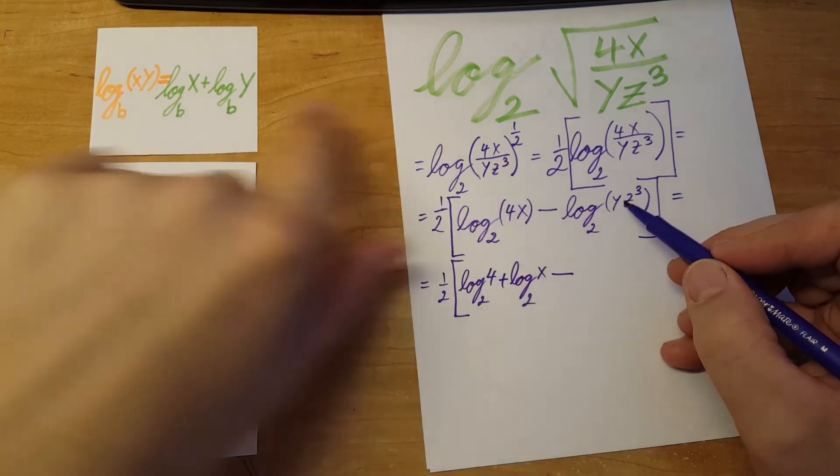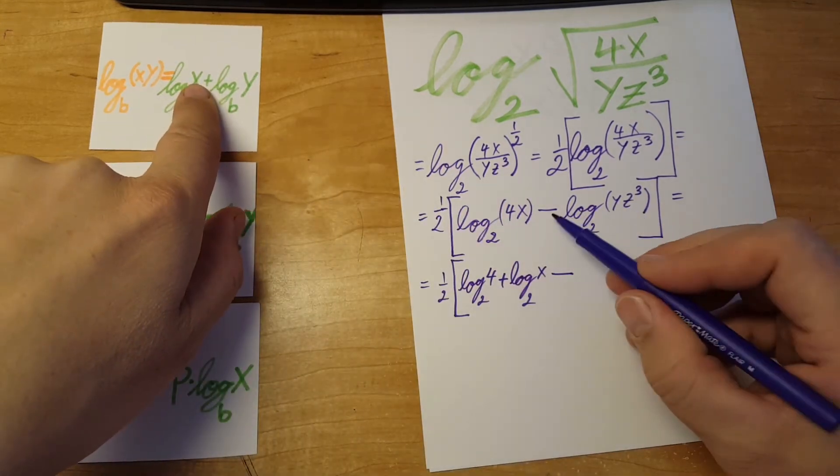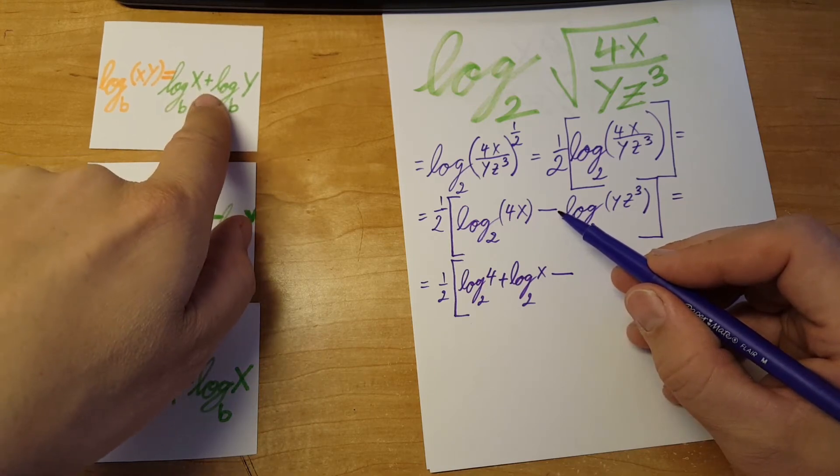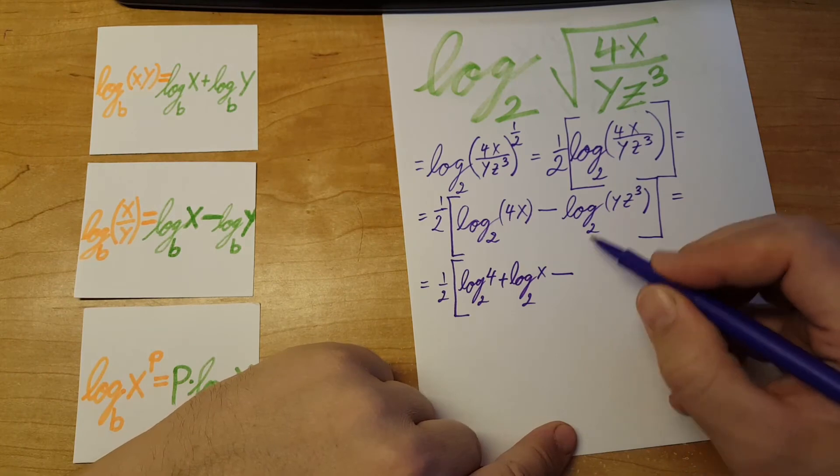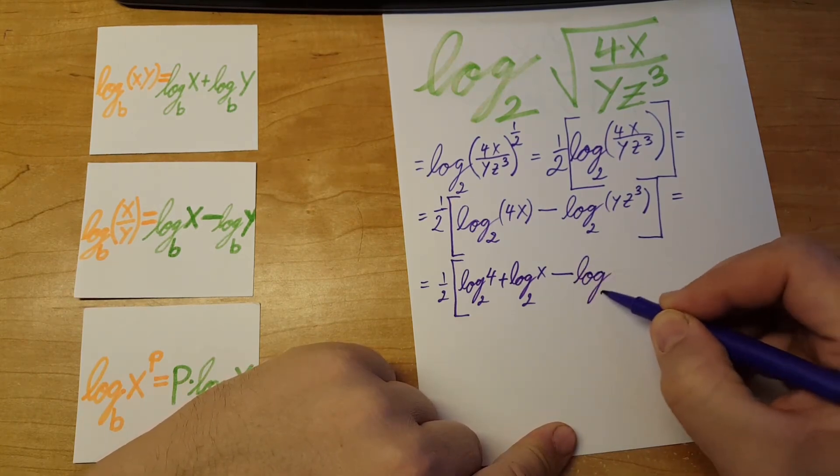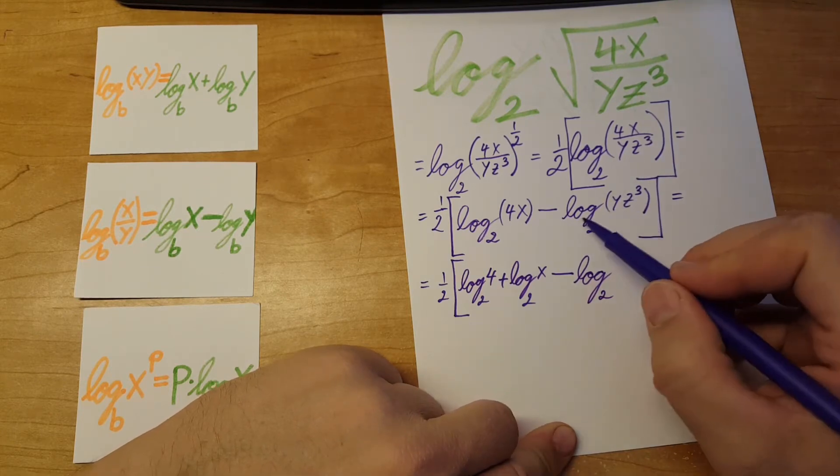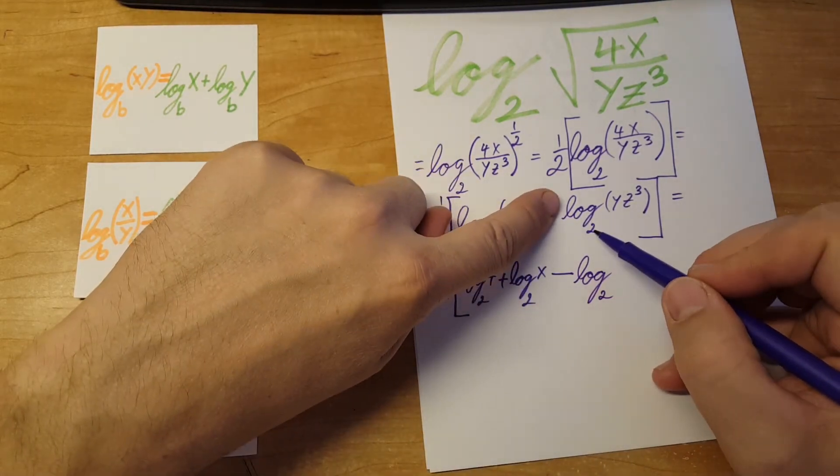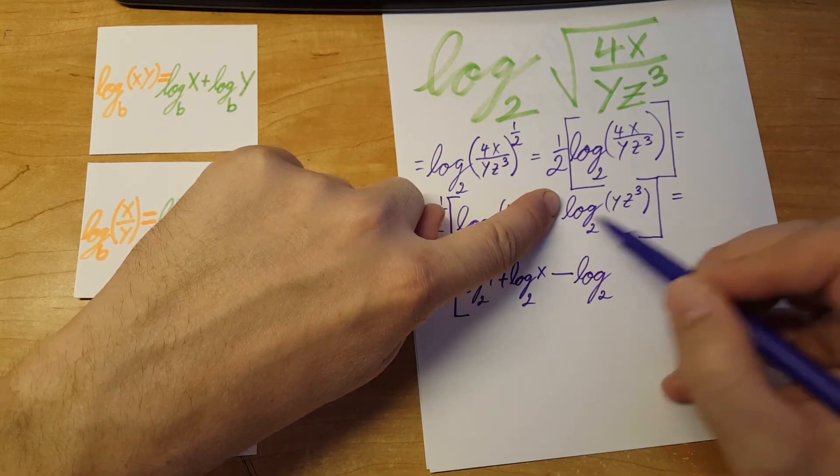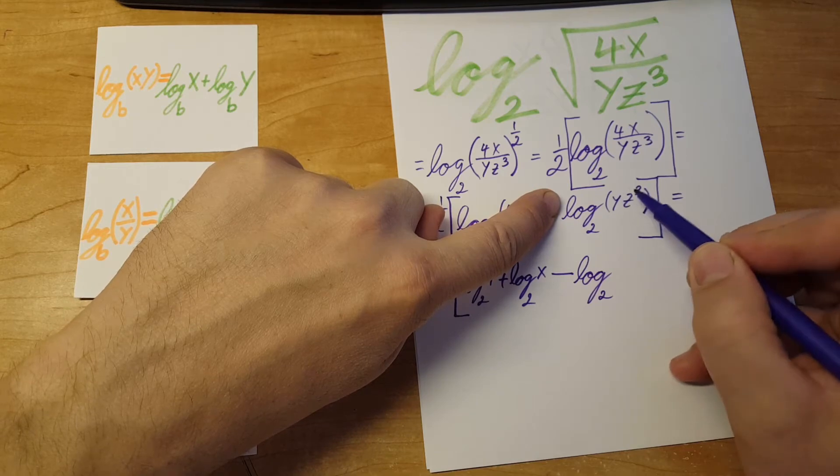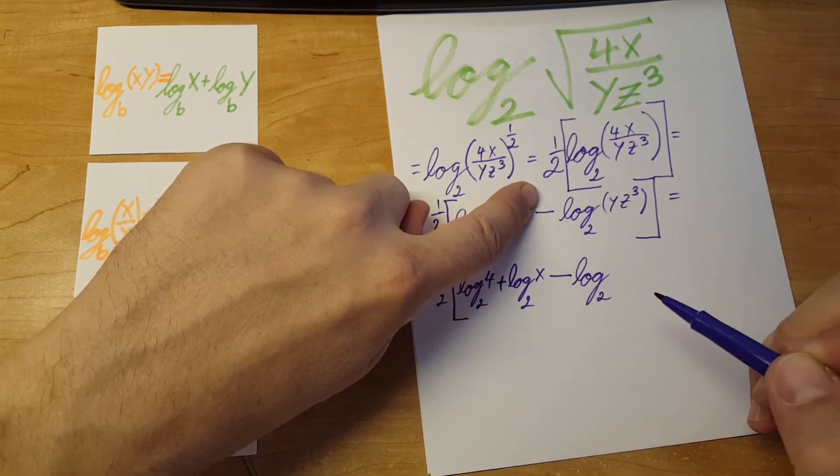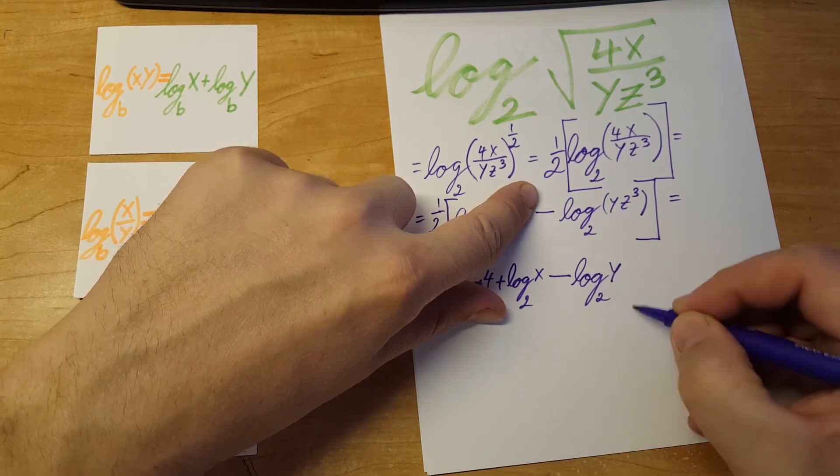And since we're going to have a negative in front, we're going to distribute it, and this plus will turn into a negative. Don't forget that. So log base 2 of y plus log base 2 of z cubed, but we have this negative we distribute, so we'll have: minus log base 2 of y minus log base 2 of z cubed.